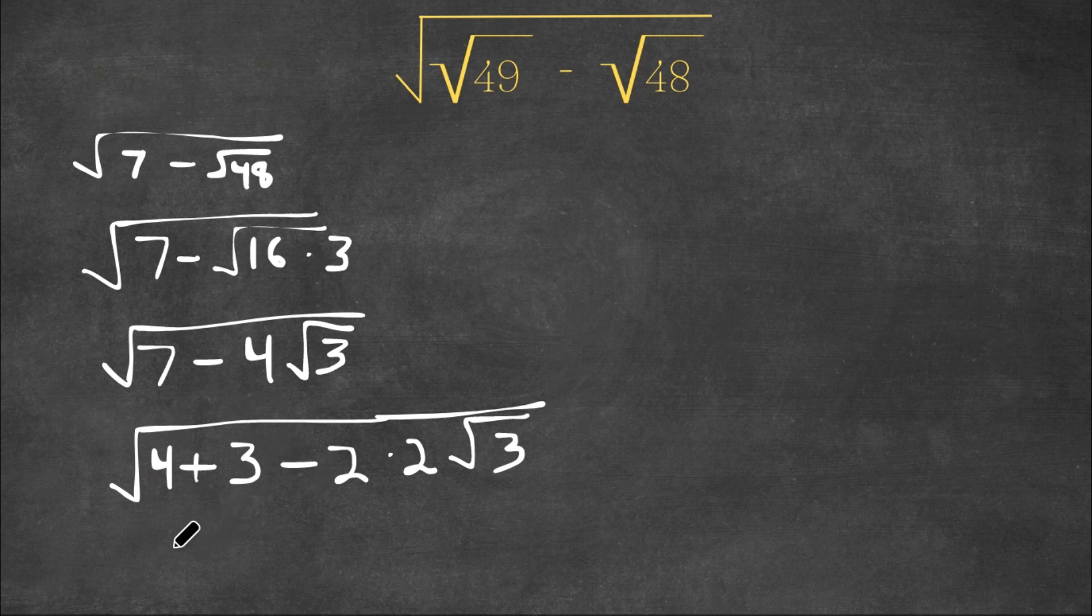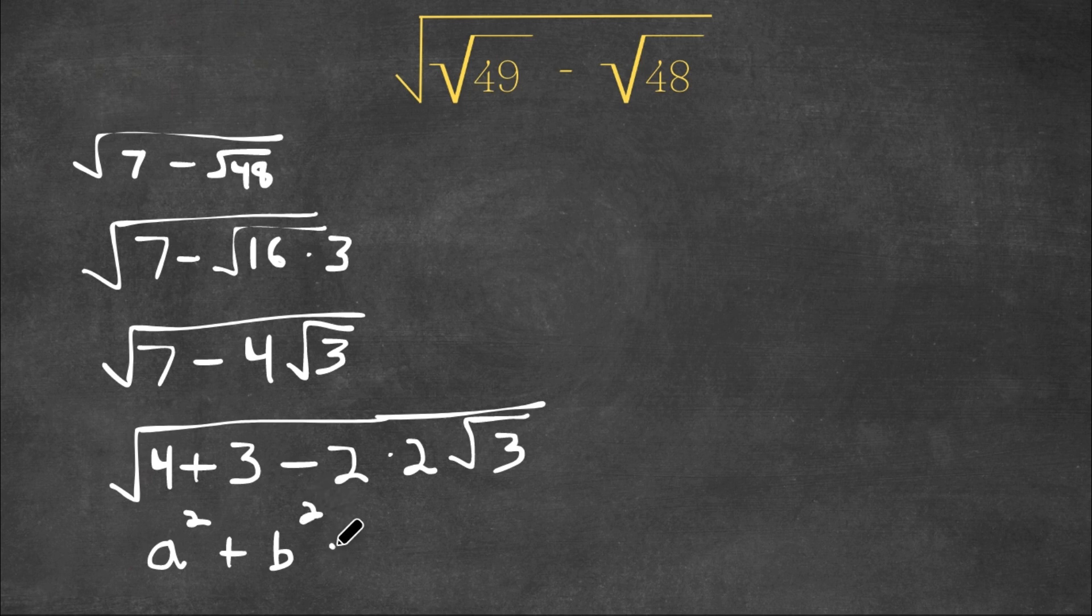So now this right here is in the form a squared plus b squared minus 2ab, and this is equal to a minus b squared.